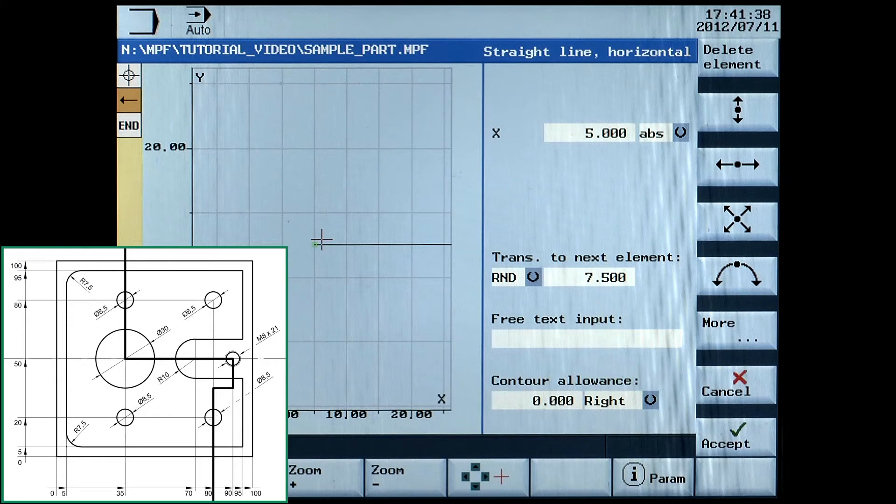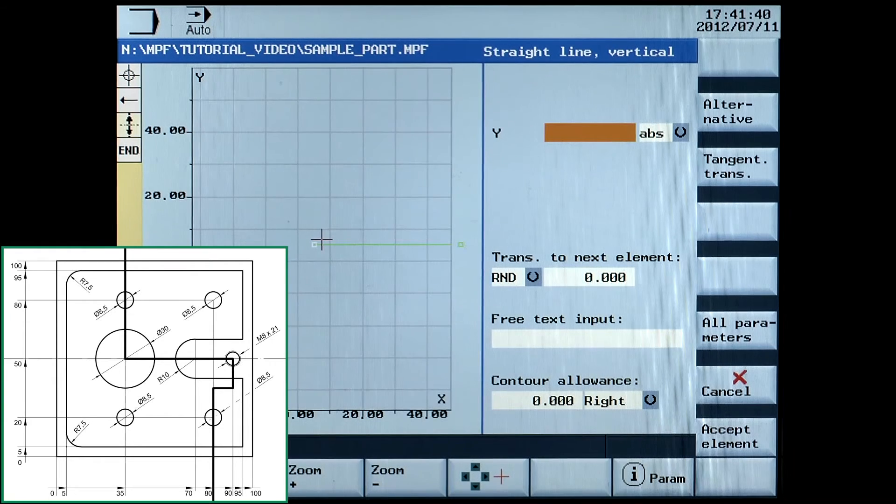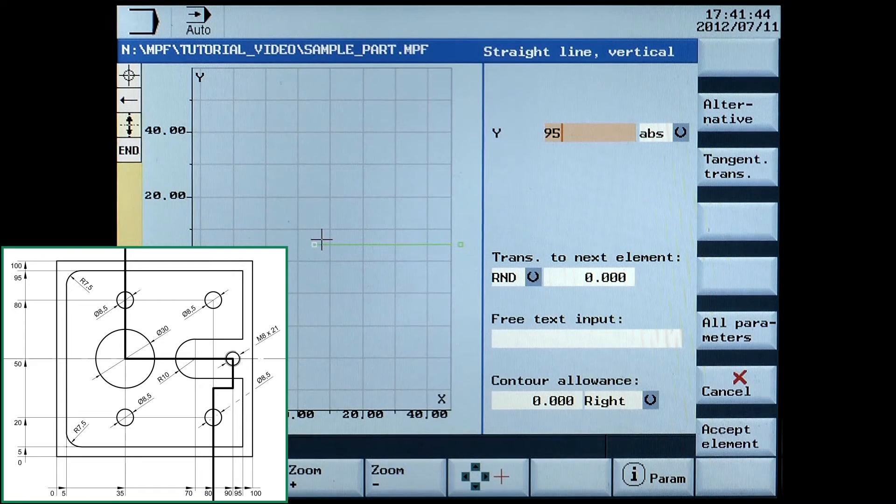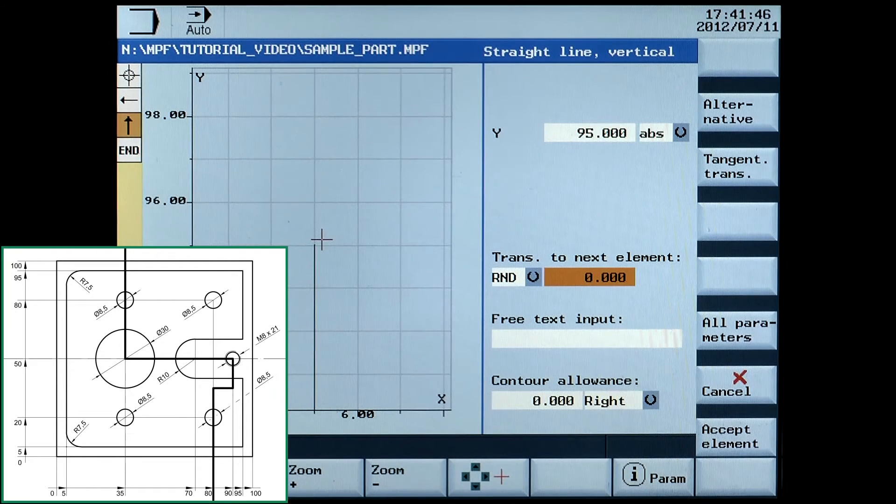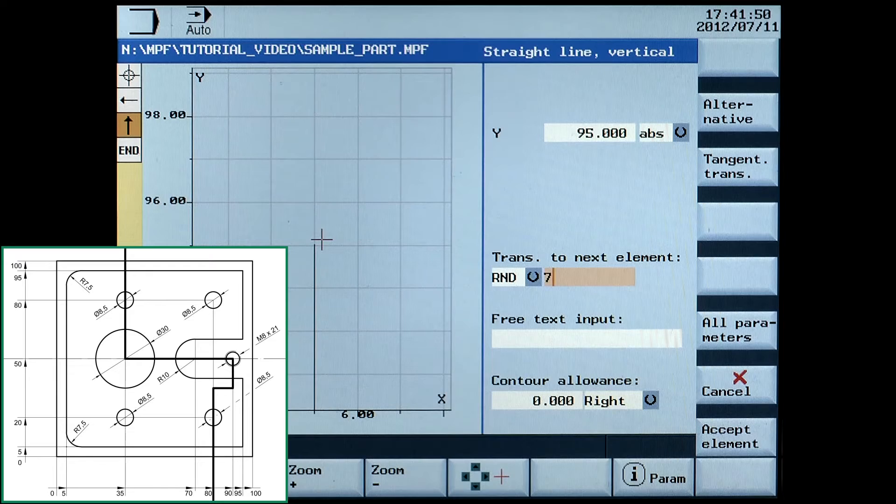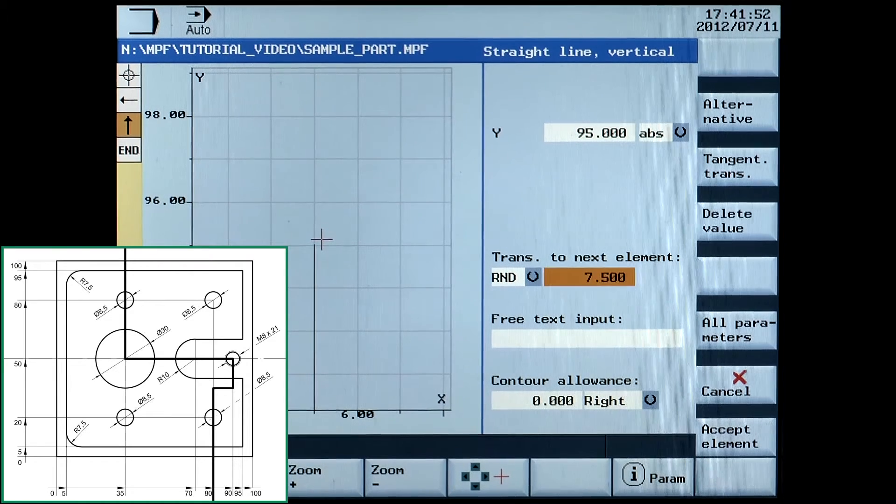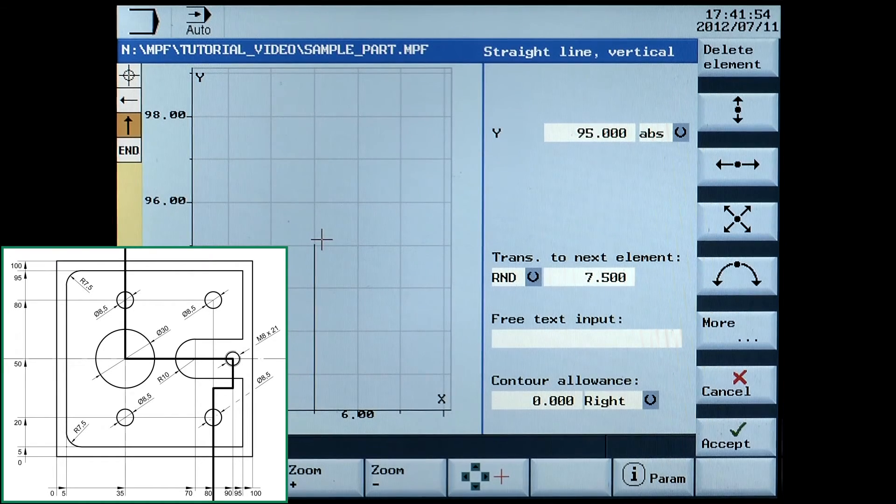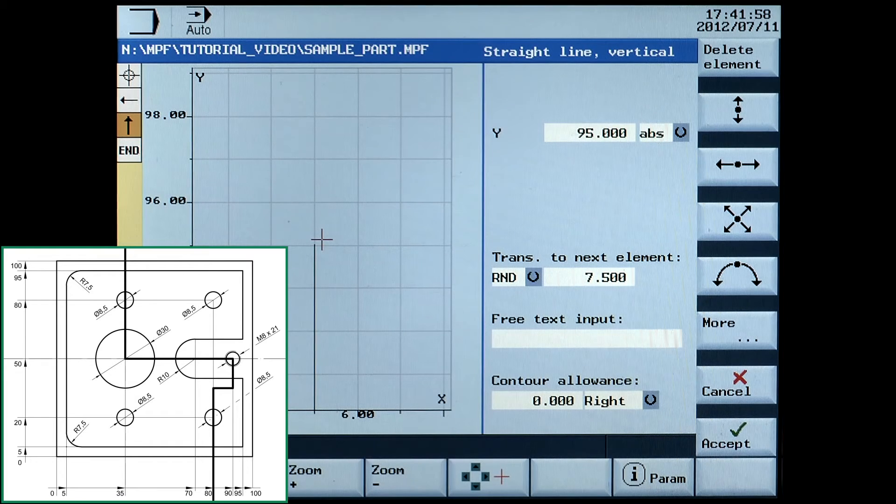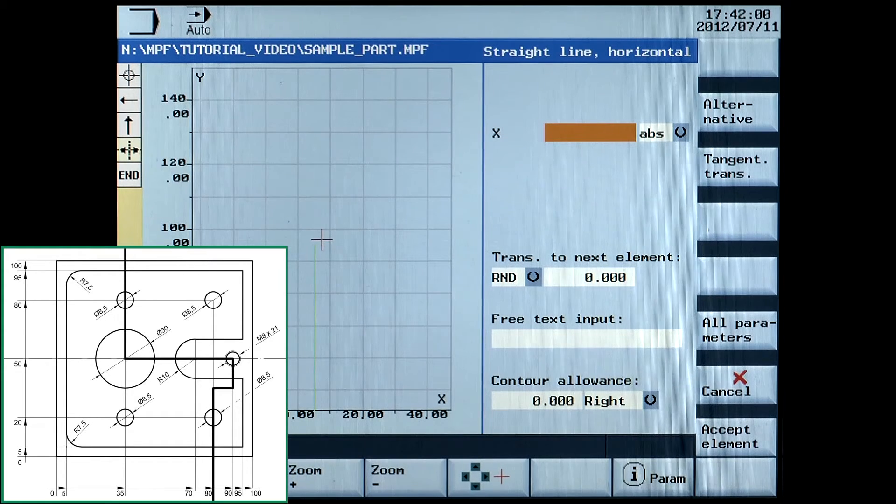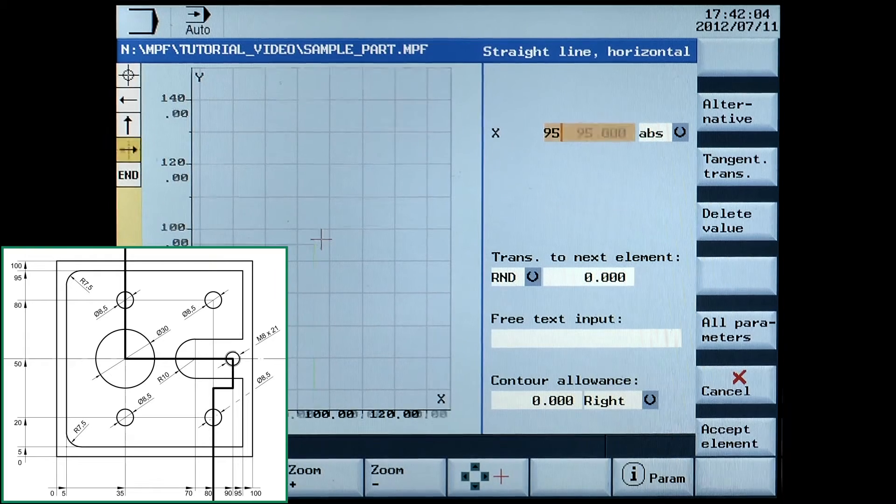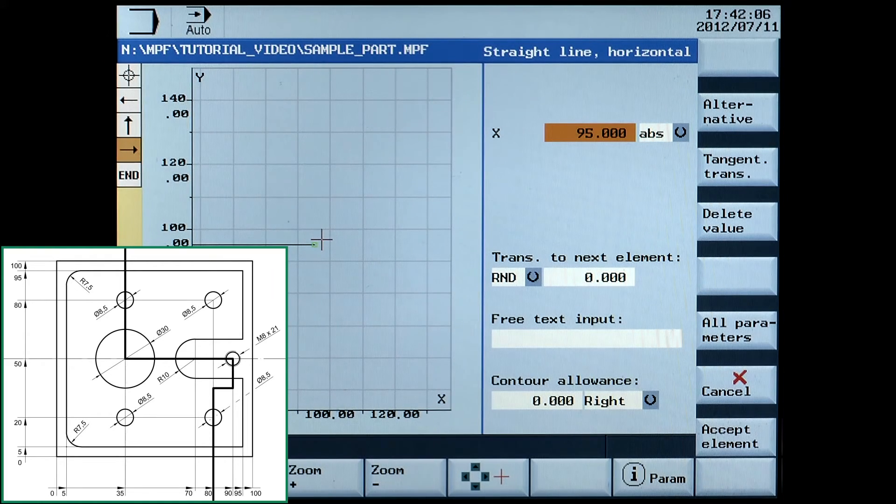Next is a horizontal line. Enter X70 absolute. Accept element.